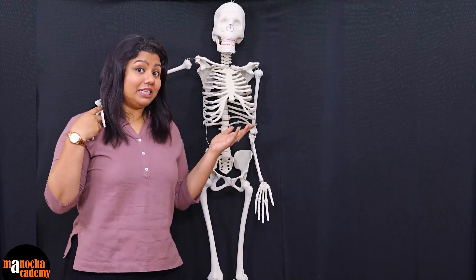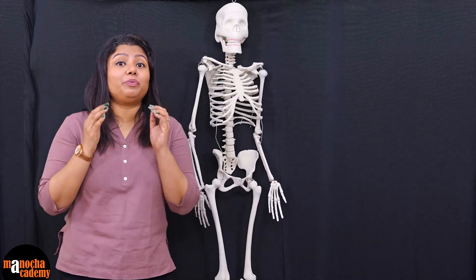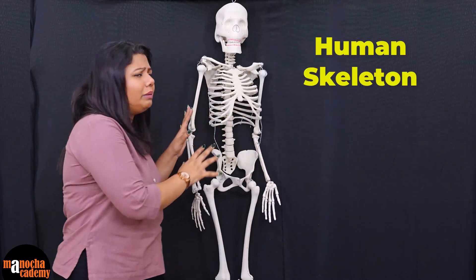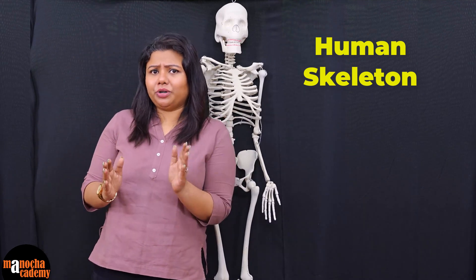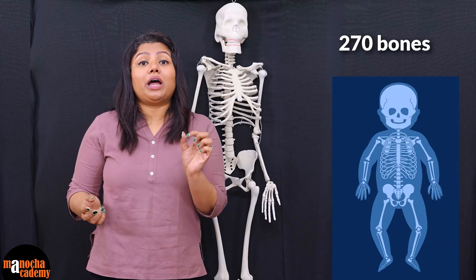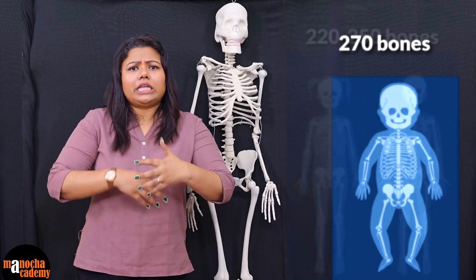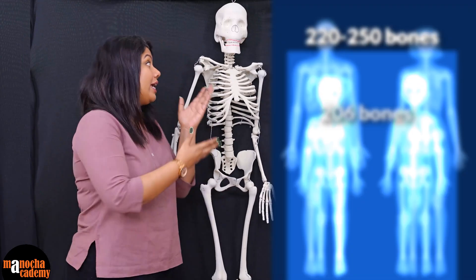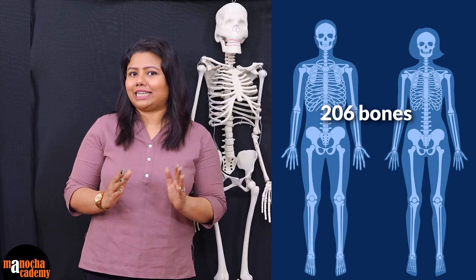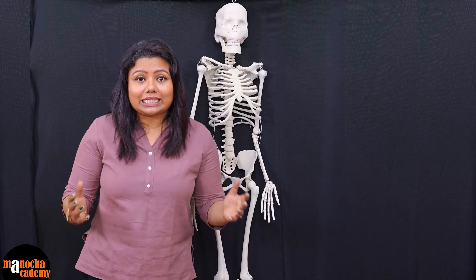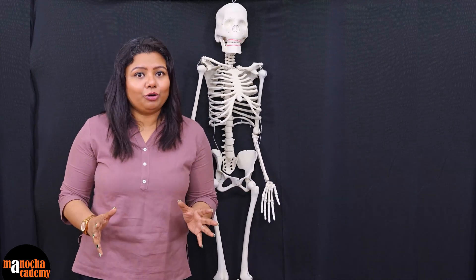Hello everyone, meet our friend here. Today we have specially got him to our studio so that we can shoot a video where we will show you all the bones that it has in its body. You must have been curious about how many bones we have. We are born with 270 bones, after which they start fusing with each other, and finally in an adult stage we are left with 206 bones. So let's jump into the video and see what these bones are, where they are present, and how they help us.